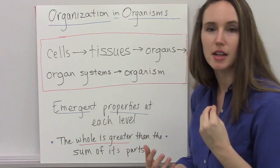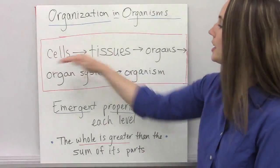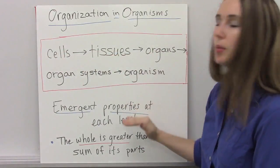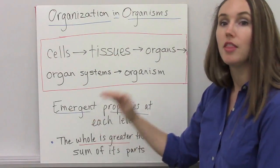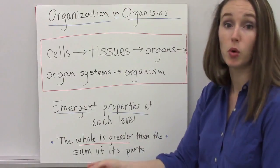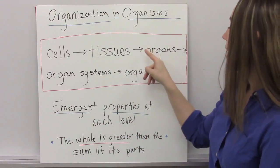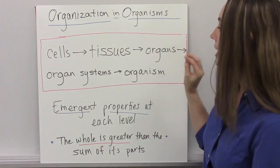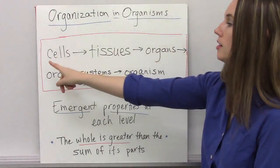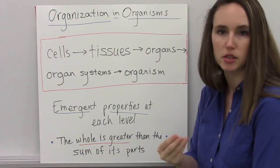What I think is fascinating is that at each level, properties emerge that weren't there in the level before it. So an organ can do more than the cell type itself. For example,